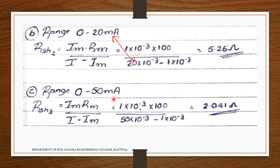For range 0–50 mA: R_sh3 = (I_m × R_m) / (I minus I_m) = (1 mA × 100) / (50 mA minus 1 mA) = 100/49 ≈ 2.041 Ω. Always remember this formula — only the value of I (the desired range) changes each time. This is how to find shunt resistance for a multi-range ammeter.